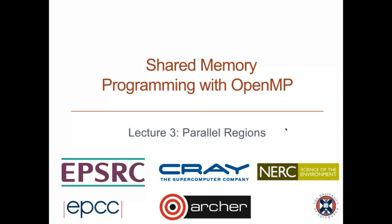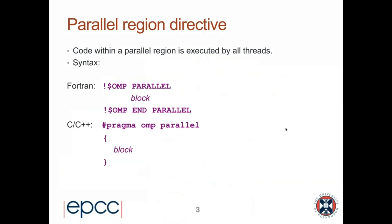We're going to start talking about parallel regions, which are the fundamental concepts in OpenMP. We saw this a little bit already last week. The parallel region directive works like this: the code within a parallel region is executed by all threads. When an OpenMP program starts executing, the master thread begins execution on its own — that's the sequential part of the program. When the first parallel region is encountered, it creates a team of threads, and the team of threads executes the block of code inside the parallel region.